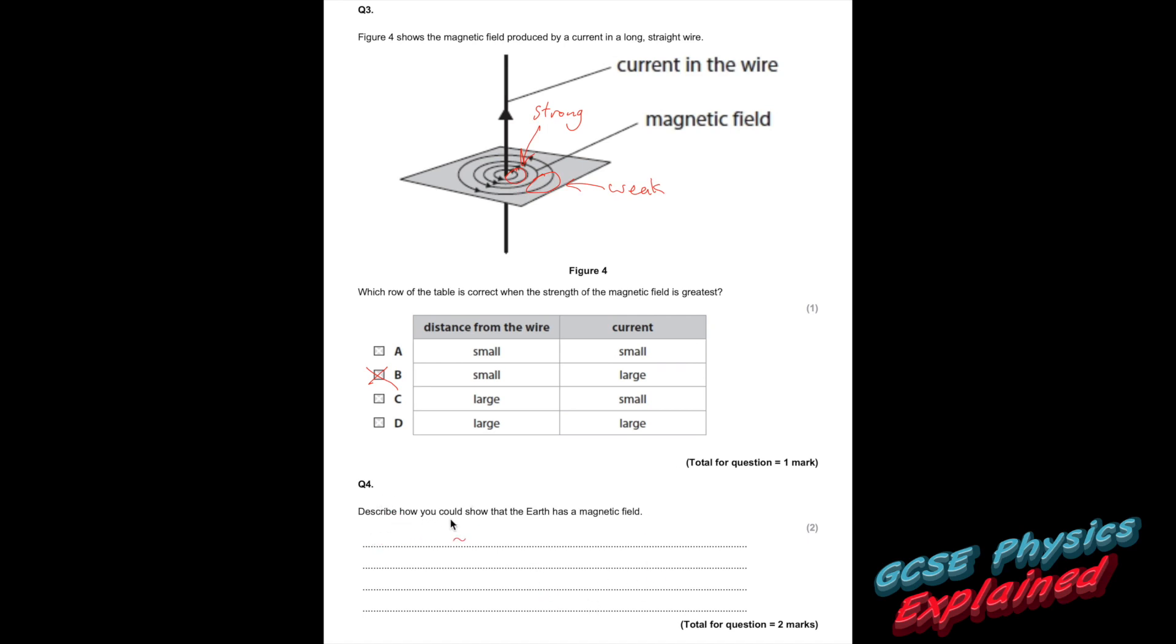Part 4. Describe how you could show that the Earth has a magnetic field. Two marks. Well, you would just use a compass, and the compass will point north. And that's because it lines up with the Earth's magnetic field. And that proves that the Earth has a magnetic field.